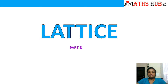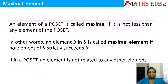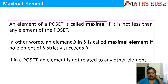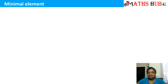This video will focus on two important definitions: maximal and minimal elements. A maximal element means an element of a poset is called maximal if it is not less than any element of the poset. Simply, maximal means it should be the greatest among all the elements. In other words, an element B in S is called maximal if no element of S strictly succeeds B.